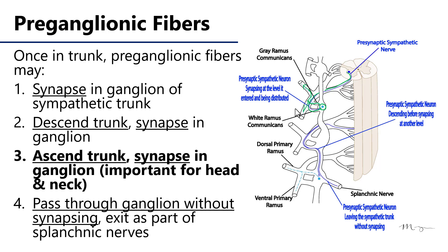Another option is that the pre-ganglionic fiber can enter into the trunk via the white ramus communicants and then ascend or descend the trunk before synapsing. For example, if it descends, it synapses and then returns back to another spinal nerve at a lower level; if it ascends, it can go back at a higher level. A fourth option is that the pre-ganglionic sympathetic fiber can leave the spinal nerve via the white ramus communicants and exit the trunk without ever synapsing.